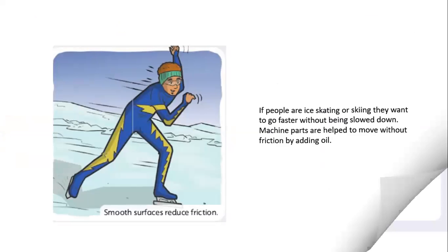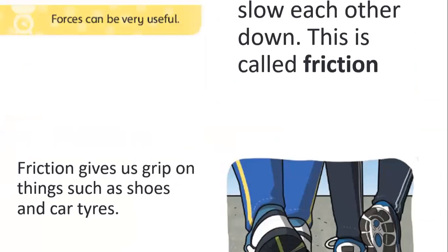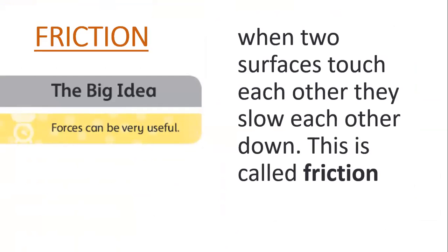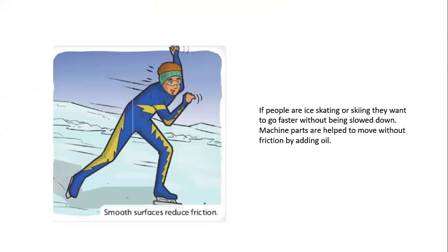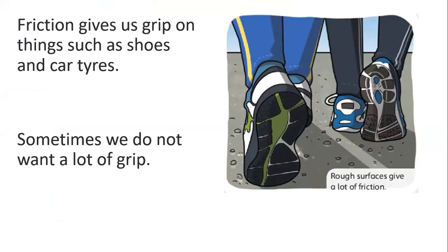Friction - there are many different types of friction. When surfaces touch each other, it causes an effect - this effect slows down movement. Look here, there are different types of surfaces. If the surface is smooth, there will be less friction and objects can move faster. But if the surface is rough, it will increase friction and movement will be slower.